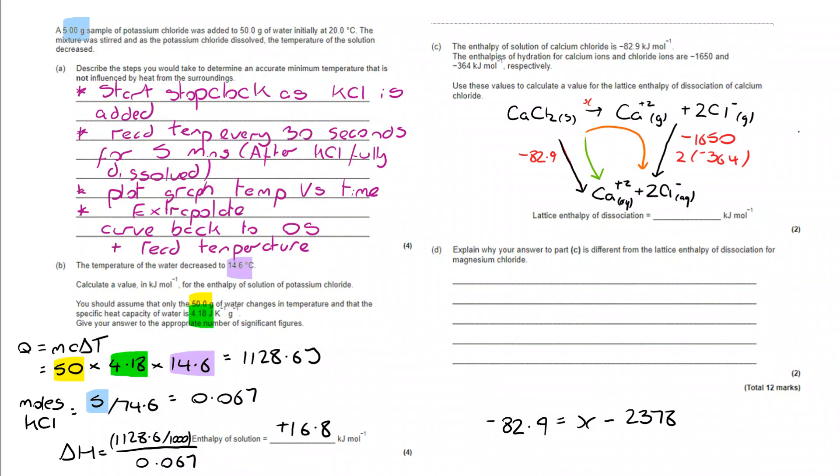Negative 82.9 equals x, take 2378, rearranging to make x the subject, and that takes me to a value of 2295.1. That should be negative 2295.1.